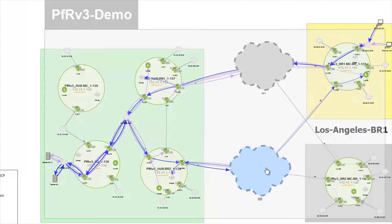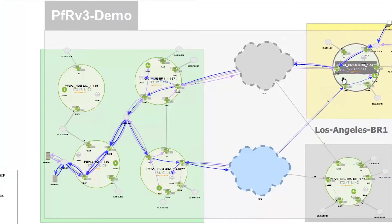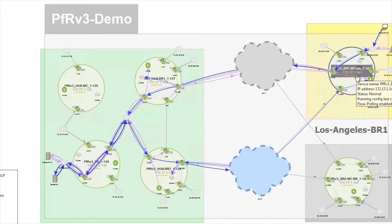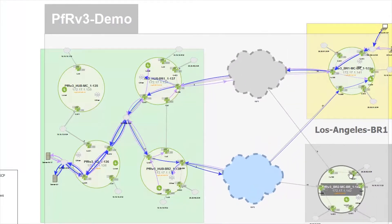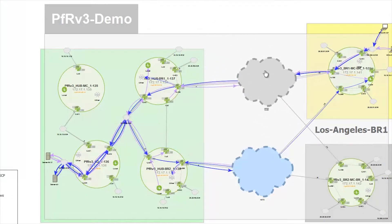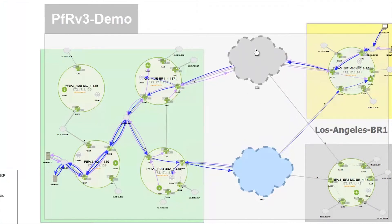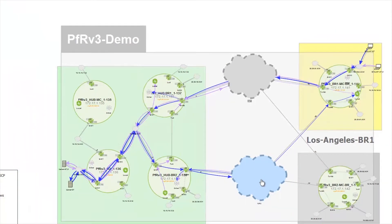There are two remote branches in this scenario. One going off to Los Angeles, represented by a collapsed MC/BR pair — master controller and border router pair — where both functionalities are converged into one device. Likewise for the router out in New York, which represents branch number two. There are two service providers managing the traffic for this PFR domain: ISP 1 at the northern path and ISP 2 at the southern path.